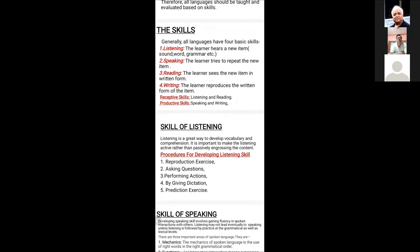The procedures for developing listening skill: First, reproduction exercises — the teacher produces a sound, word, or sentence and asks the students to reproduce the same in a group and then individually. Second, asking questions — the teacher narrates a story or any information to the learners and asks questions, and the students answer them after listening carefully. Third, performing actions — the teacher performs actions with speech and the students are then asked to do the same accordingly. Fourth, giving dictation — the teacher dictates and the students write accordingly, enhancing both listening and writing skills.